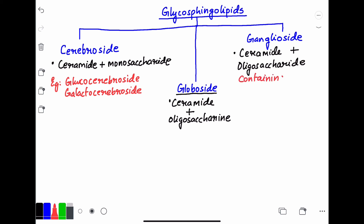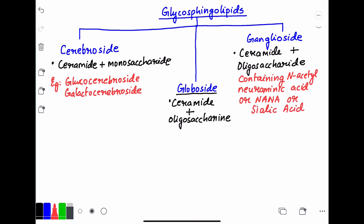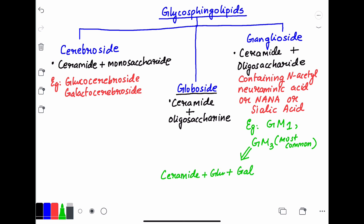Ganglioside is ceramide plus an oligosaccharide that contains sialic acid, also known as N-acetylneuraminic acid (NANA). GM3 is the simplest form; it is composed of a ceramide unit plus glucose plus galactose plus NANA — the glucose and galactose form the oligosaccharide part. As already mentioned, GM3 acts as the receptor for cholera toxin.